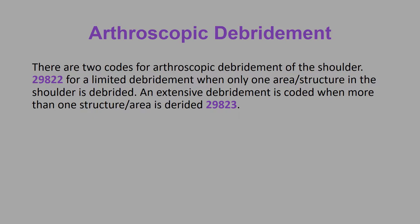Arthroscopic debridement. There are two codes for an arthroscopic debridement of the shoulder. 29822 is for a limited debridement when only one area or structure in the shoulder is debrided. An extensive debridement is coded when more than one structure or area is debrided, and that is coded with 29823.